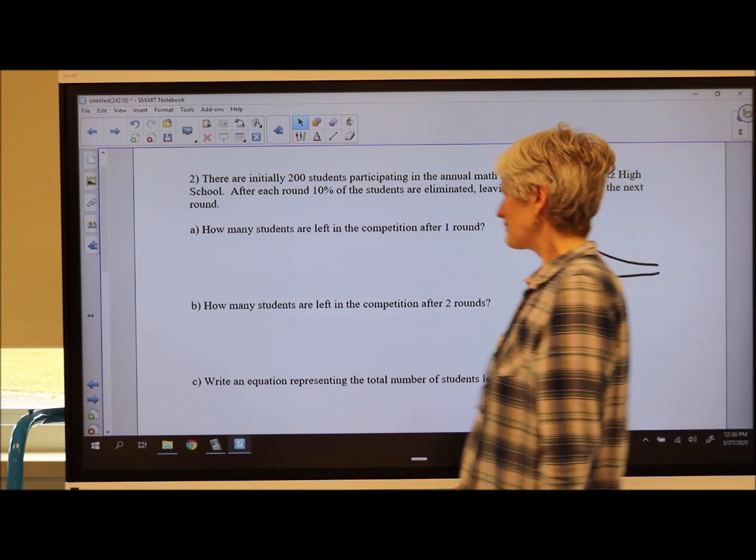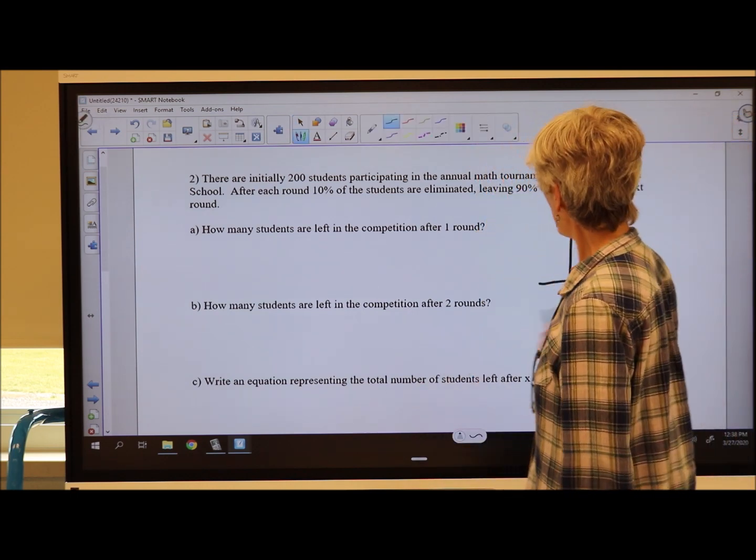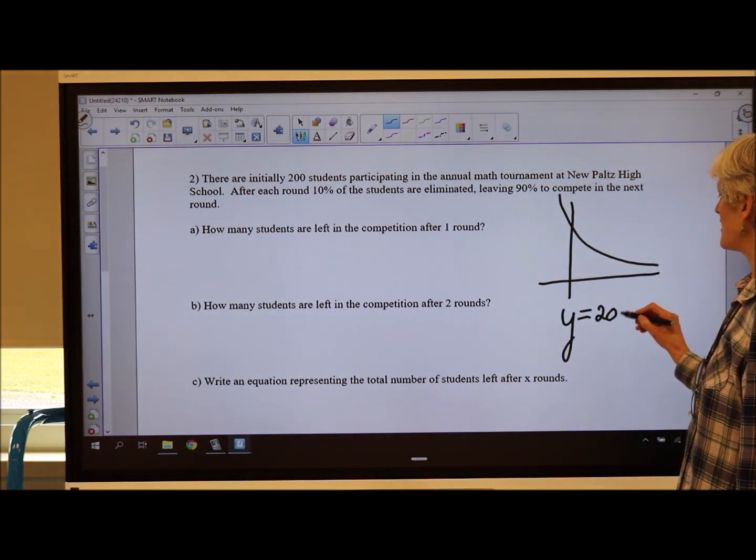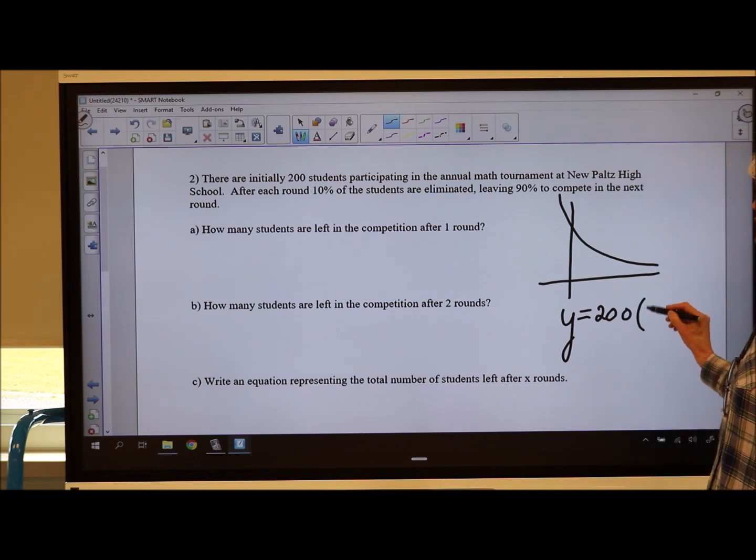So let's think of what my general equation is. You can always start with your starting value, and you can always think about your 100%, and then what you're losing. I'm losing 10% each round.